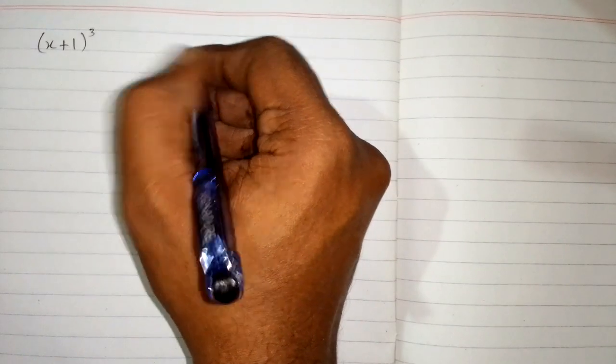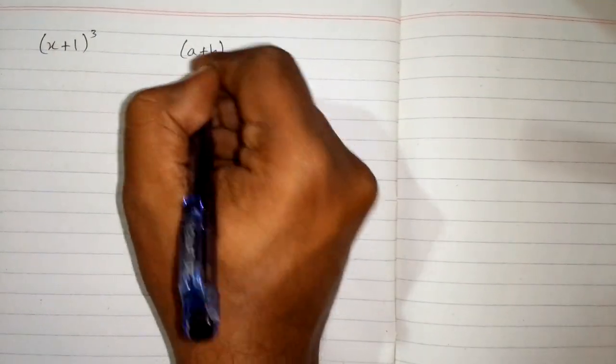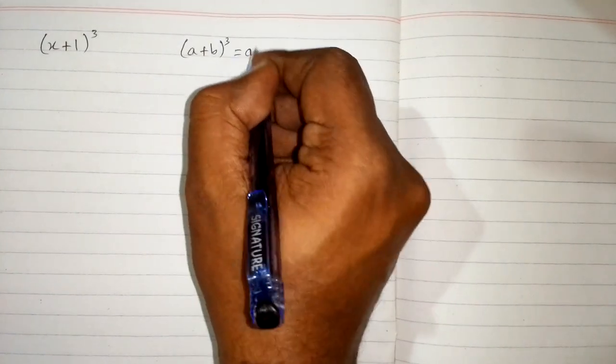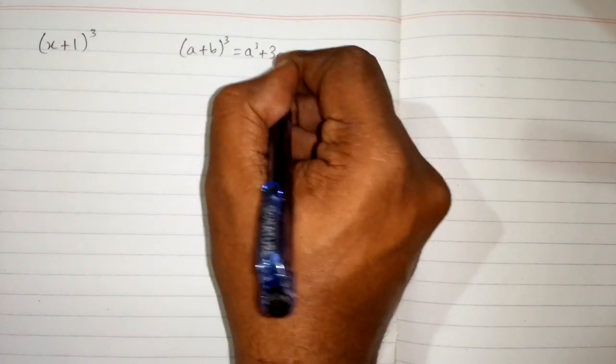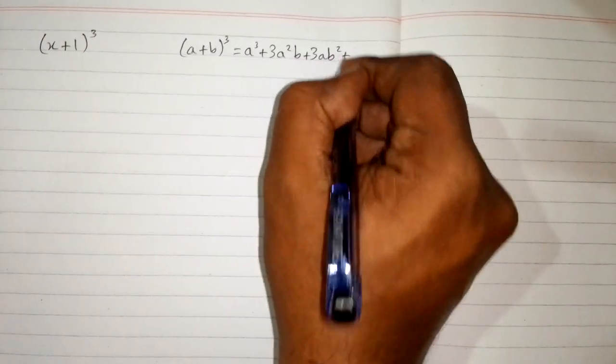In this video we will find the cube of x plus 1. We will use the algebraic identity which is (a + b)³ = a³ + 3a²b + 3ab² + b³.